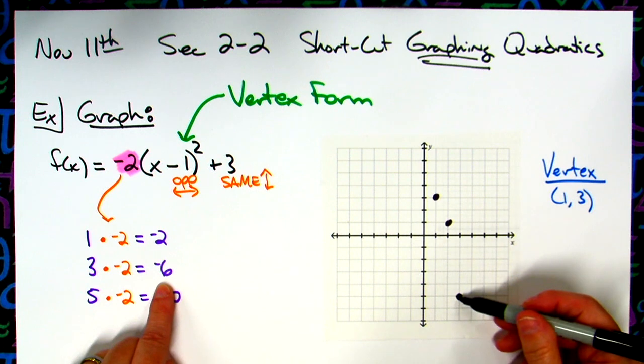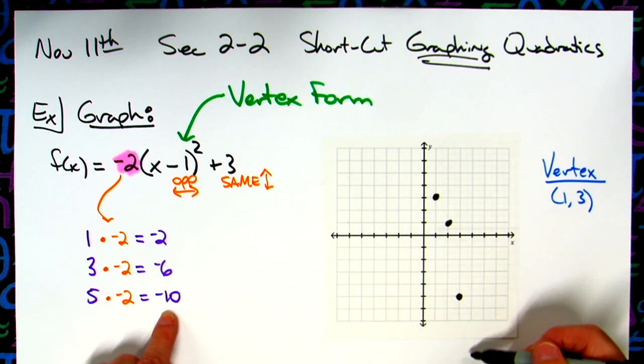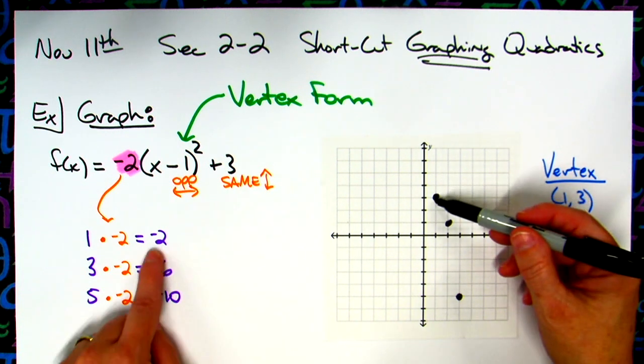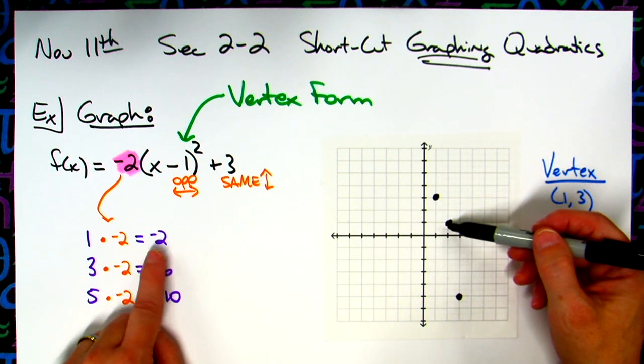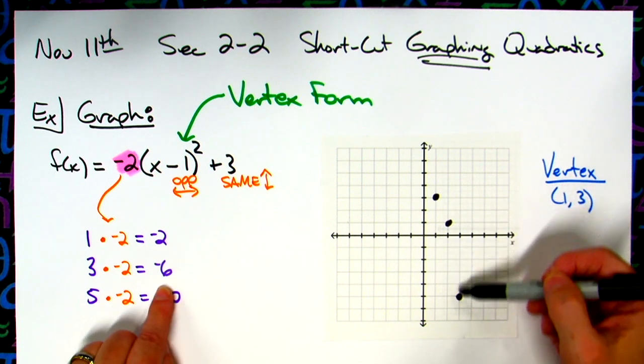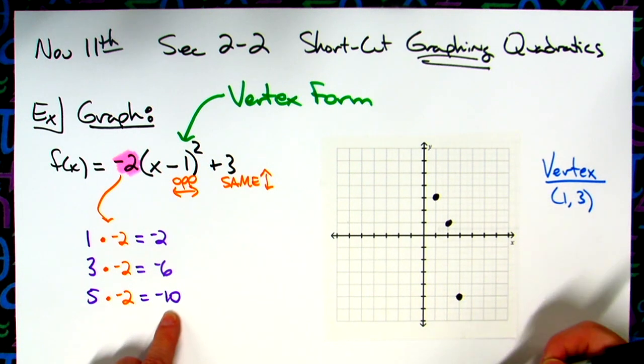Now, if my graph paper was big enough, I could go to the right one and down ten. But I don't really need that point, right? Because I've got enough on there. I know what my parabola is looking like. Do I need to go through that again? I start at my vertex. I went to the right one and then down two because that was my magic numbers that I created over here. I go to the right one. And then I went down six. And then I don't have to do the ten because I'm off my graph paper.